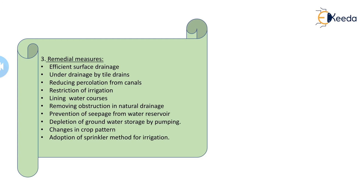Removing obstructions in natural drainage — if there is an obstruction in the path, we need to remove it. Prevention of seepage from the water reservoir is also important. Depletion of groundwater storage by pumping — once the groundwater level is too close to the ground surface, we can pump and extract this water for use. Hand pumps in villages and constructed wells and aquifers can be used to pump the water, thereby decreasing the groundwater level so that water generates a path to flow downward.